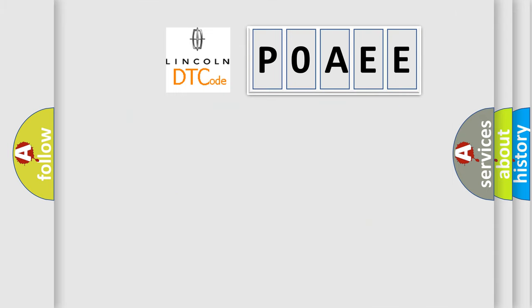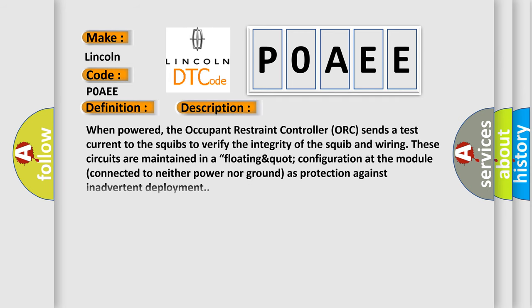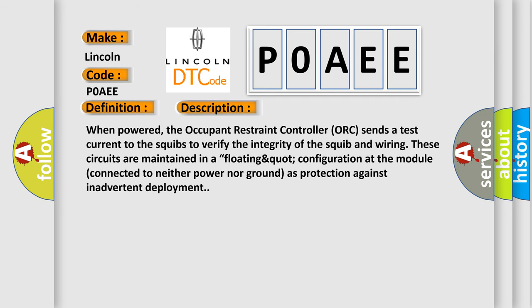So, what does the diagnostic trouble code P0AEE interpret specifically for Lincoln car manufacturers? The basic definition is: Front passenger pretensioner circuit short to battery. When powered, the occupant restraint controller (ORC) sends a test current to the squibs to verify the integrity of the squib and wiring. These circuits are maintained in a floating configuration at the module, connected to neither power nor ground, as protection against inadvertent deployment.